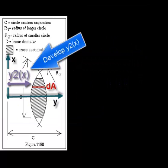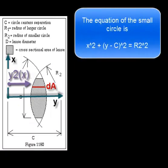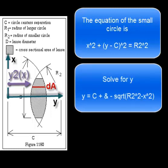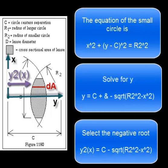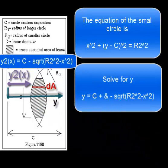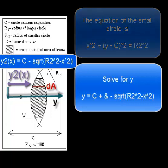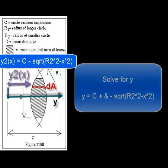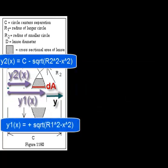Now develop an expression for Y2, a function of x. The equation of the small circle is similar except Y is replaced with Y minus C. Solve for Y. Again we have two roots, one positive and one negative. This time we select the negative root. So there's Y2, a function of x and Y1, a function of x.